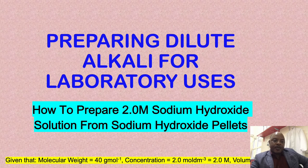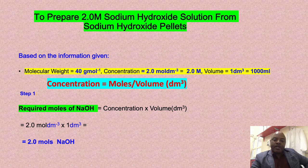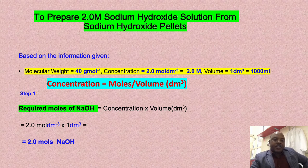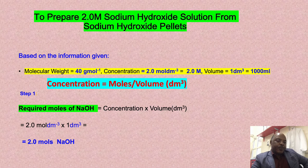In doing this there are three steps. Step number one: we have to calculate the required moles of sodium hydroxide pellets used for the preparation. We use the formula: concentration equals moles divided by volume in dm³. Making moles the subject, the required moles equals concentration times volume — 2 mol/dm³ × 1 dm³. The dm³ units cancel out, giving us 2 moles of sodium hydroxide.